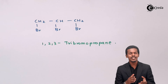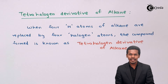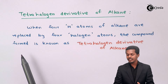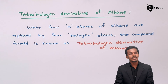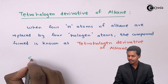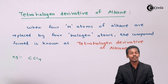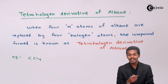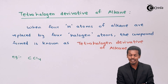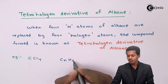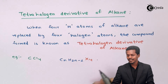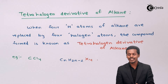Now let us talk about the tetrahalogen derivative of alkane. When four hydrogen atoms of an alkane are replaced by four halogen atoms, the compound formed is known as tetrahalogen derivative of alkane. An example is CCl₄, also called carbon tetrachloride. The general formula for tetrahalogen derivatives is CₙH₂ₙ₋₂X₄, following the same pattern as the trihalogen derivative.